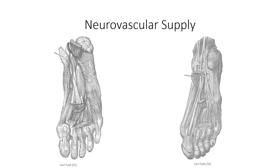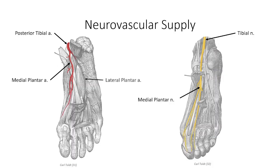Before leaving the plantar area, let's look at the neurovascular bundles. The posterior tibial artery and tibial nerve enter the foot posterior to the medial malleolus, between the tendons of flexor digitorum longus and flexor hallucis longus. Here the bundle divides into the medial plantar artery and nerve medially, and the lateral plantar artery and nerve laterally. The medial plantar nerve supplies flexor digitorum brevis, the first lumbrical, and provides cutaneous innervation to the medial three and a half digits — giving more cutaneous and less muscular distribution compared to the lateral branch.